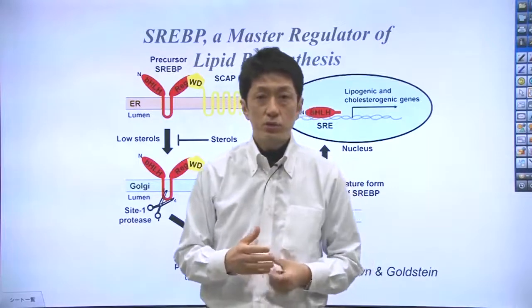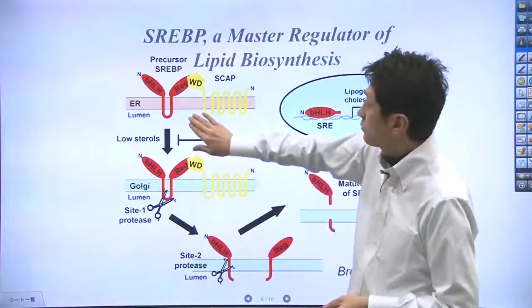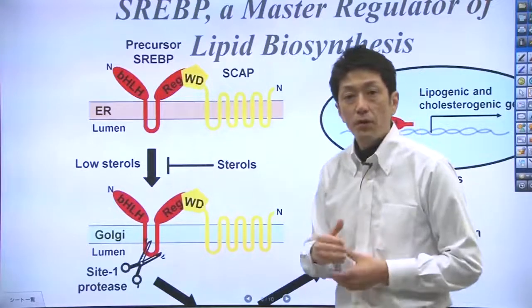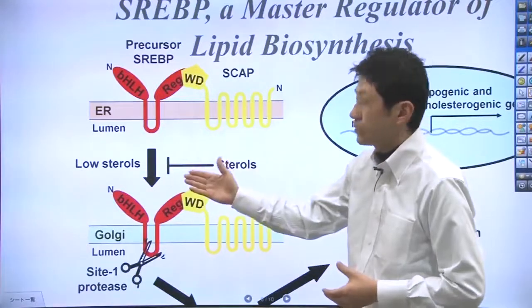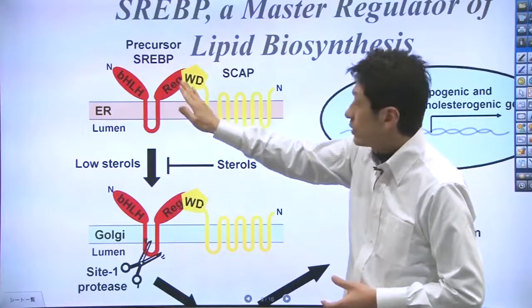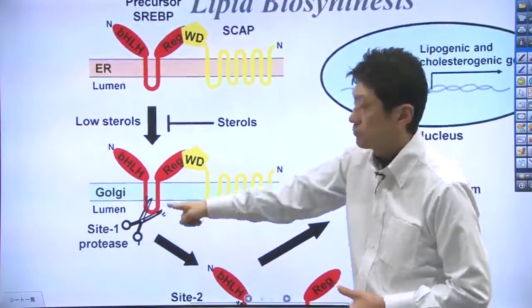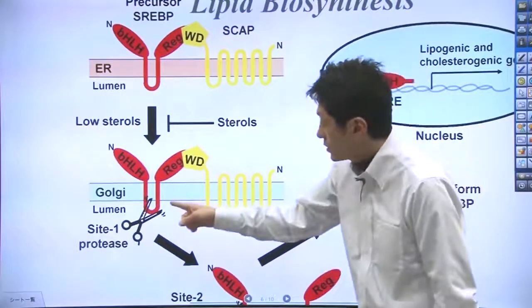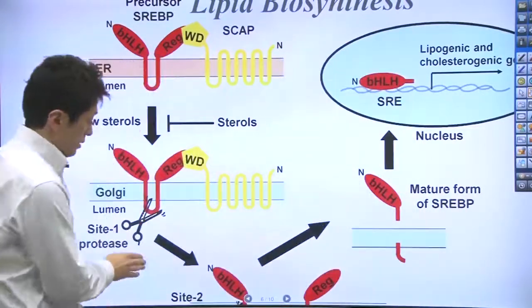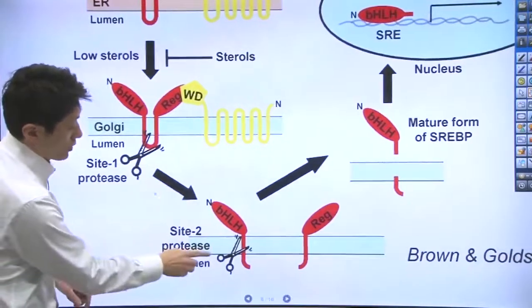SLBP usually stays in the endoplasmic reticulum within cells, right here. When the body is depleted of fat or lipid, SLBP moves from the endoplasmic reticulum into the Golgi complex, where it is cleaved by two proteases: site 1 protease and site 2 protease, right here.